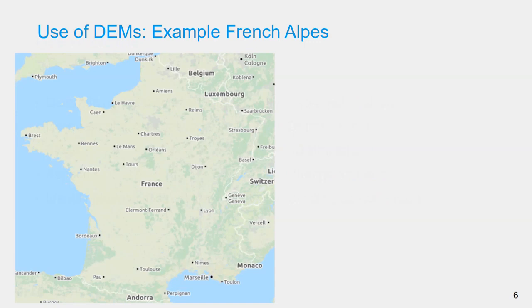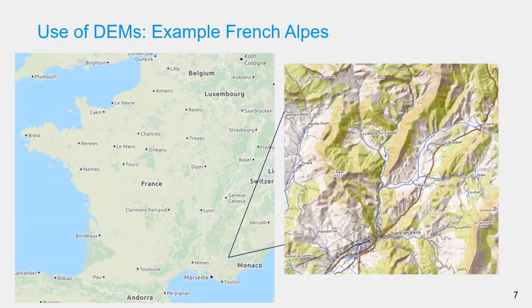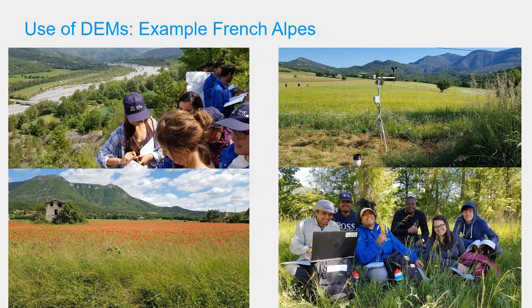I will illustrate the use of DEMs using an example from the French Alps, in an area near Digne-les-Bains, where students from IHE Delft in the Hydrology specialization do their fieldwork. During the fieldwork, students study hydrological processes in their own catchments. Prior to fieldwork, studying the digital elevation models of those catchments helps understand the relation between hydrology and elevation differences, and helps prepare their sampling strategy. When coming back from the field, a DEM can also help in further interpretation of the study area.